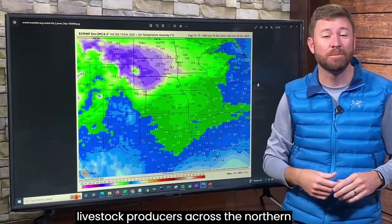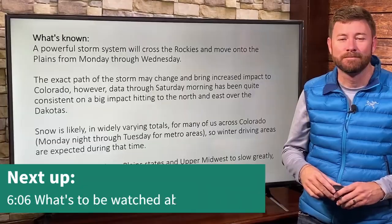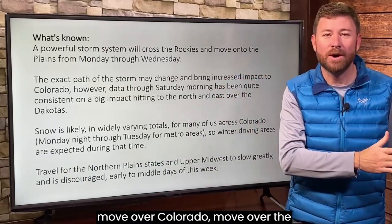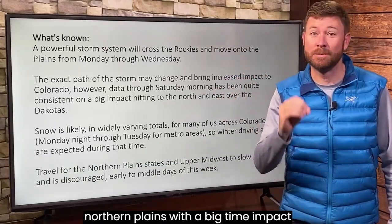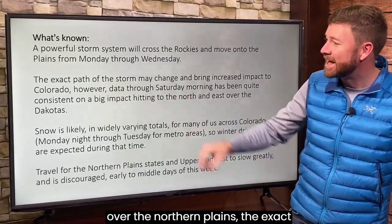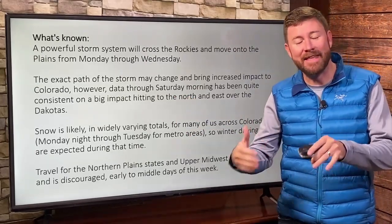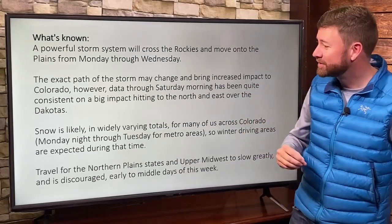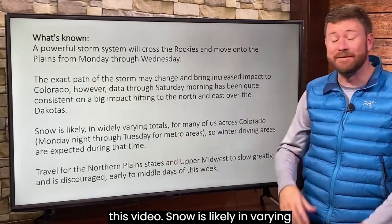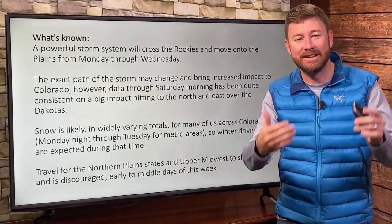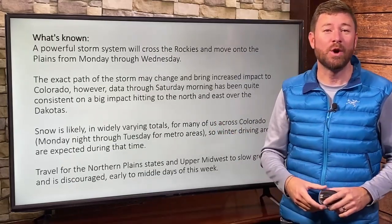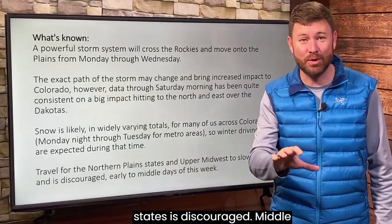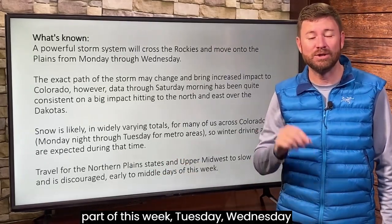Here's what's known so far: there is a very powerful storm system that's going to cross over the Rockies, move over Colorado, and move over the northern plains with a big-time impact. The exact storm path may shift, which could bring higher impacts into Wyoming and Colorado. Snow is likely in varying totals across the Rockies into Colorado, with big-time bullseye totals over the Dakotas — likely around South Dakota. Travel for the northern plains states is discouraged through the middle part of this week, particularly Tuesday and Wednesday.